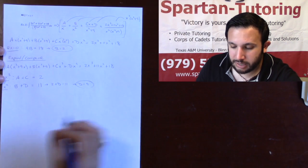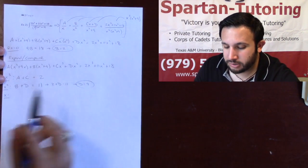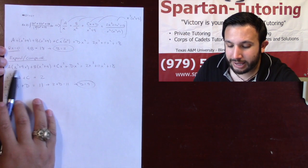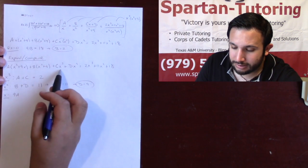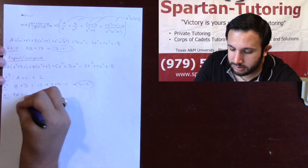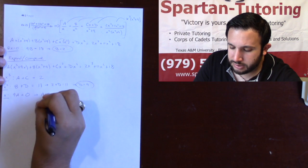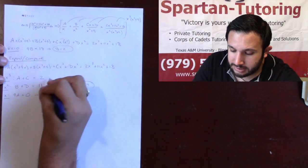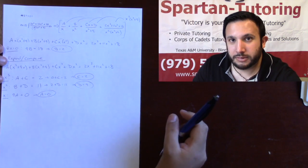Now let's deal with the x terms. I have 9Ax from the A expansion, and there are zero x terms on the right side. So 9A equals 0, meaning A equals 0. Now going back to A plus C equals 2: since A is 0, C equals 2. That's how you find A, B, C, and D using expand and compare.